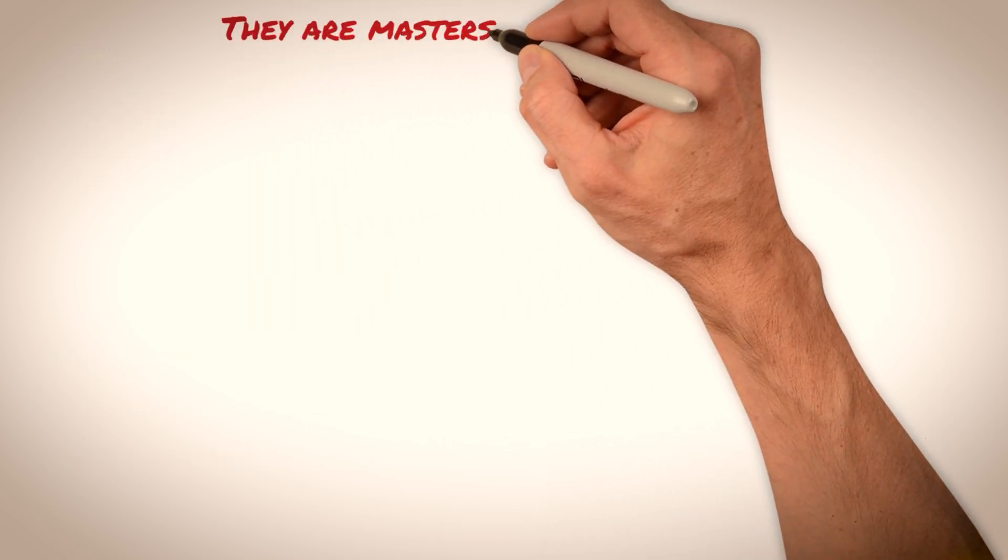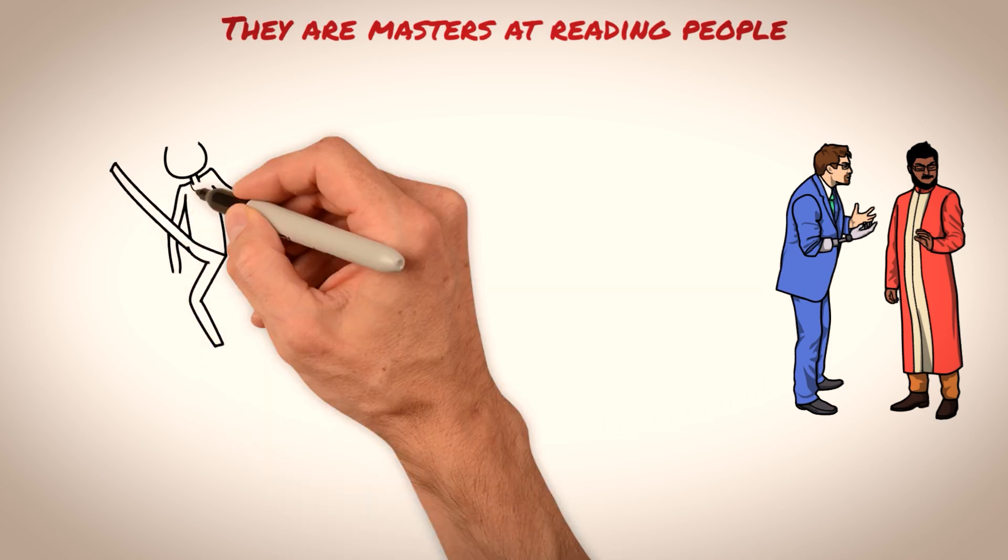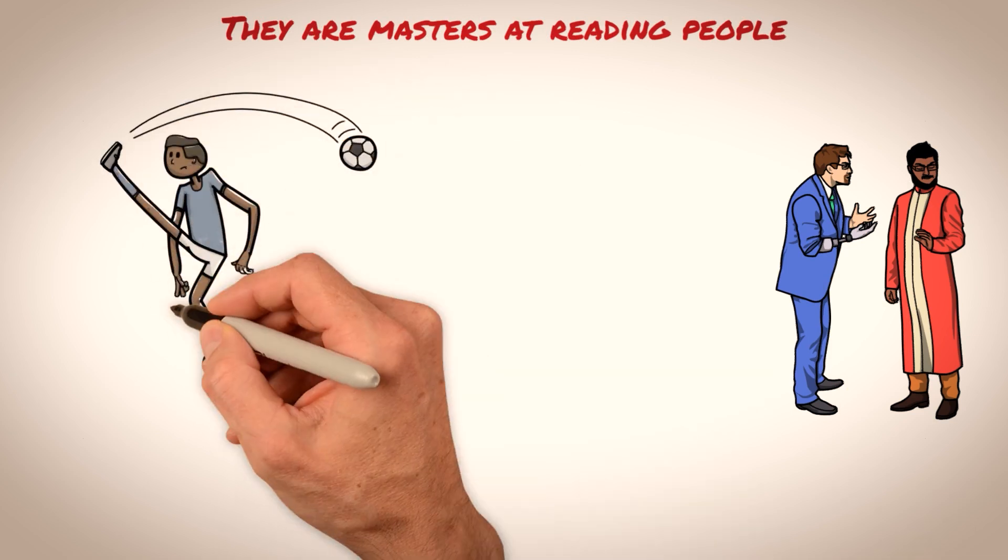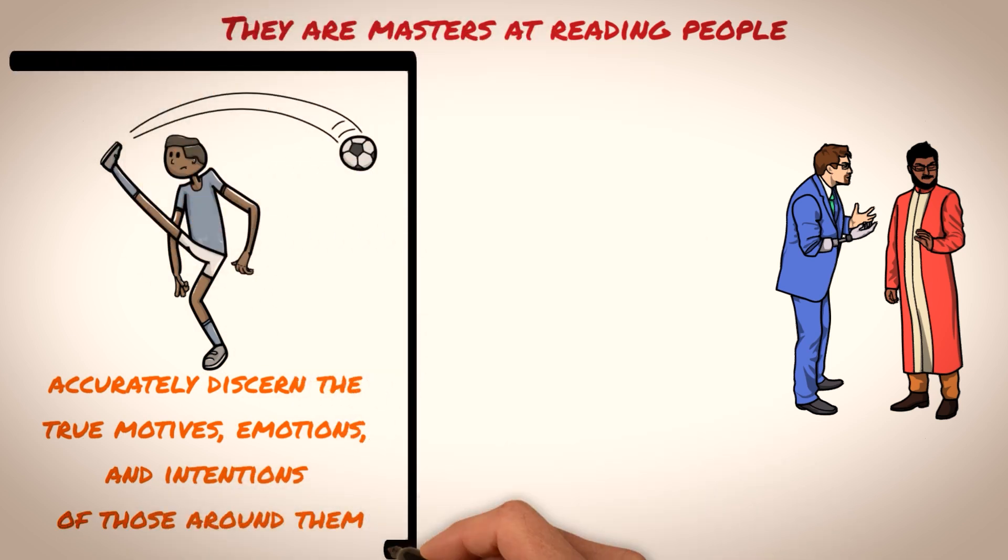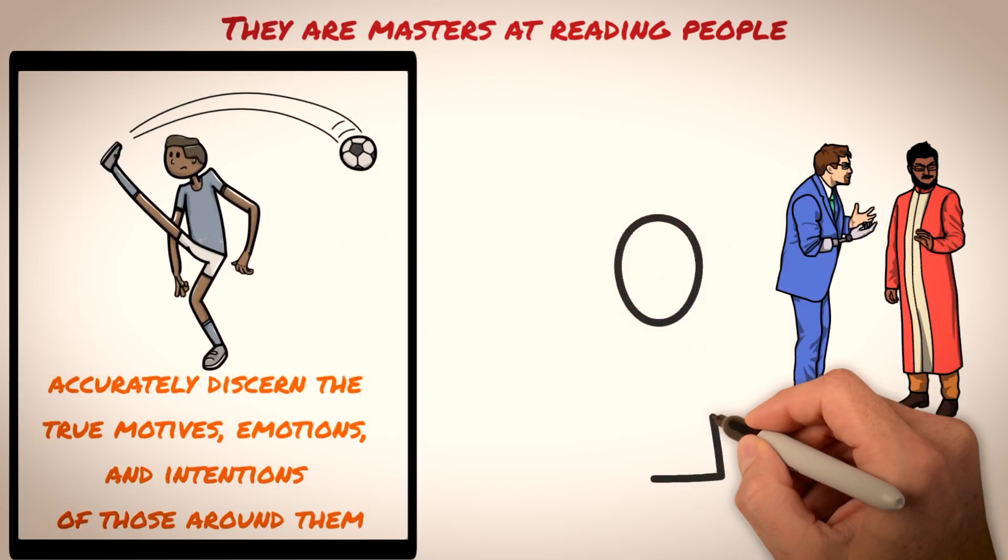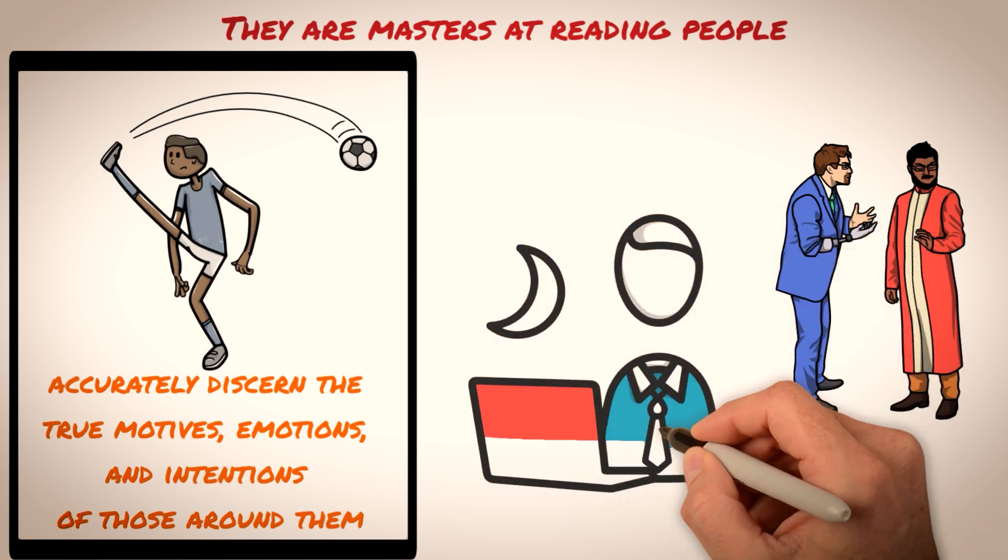They are masters at reading people. Don't ever think you can fool the Sigma male. They possess a unique skill set that allows them to accurately discern the true motives, emotions, and intentions of those around them. This ability can make them seem like they are always one step ahead of everyone else, which can be both impressive and daunting.